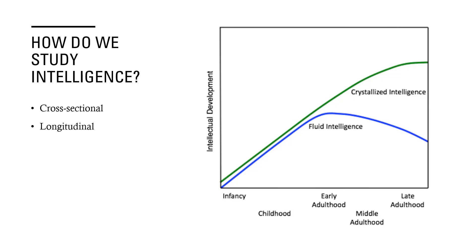Cross-sectional designs are helpful for intelligence studies because we get to study different people and different eras. We can compare more affluent people to less affluent people, people raised in large families to smaller families, and various other factors. With longitudinal studies, we can see how aging affects intelligence. We've learned that intelligence remains stable, although crystallized intelligence increases with age and fluid intelligence decreases.